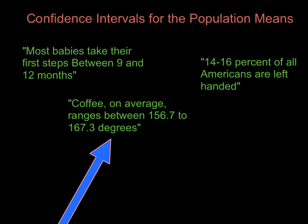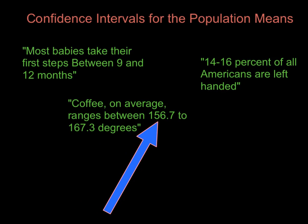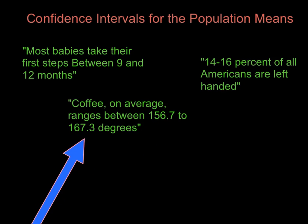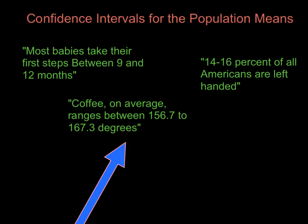Quality control officers at manufacturing facilities rely on confidence intervals. So you may have your machine calibrated so that it produces coffee between 156.7 to 167.3 degrees.